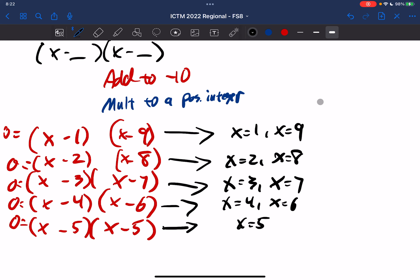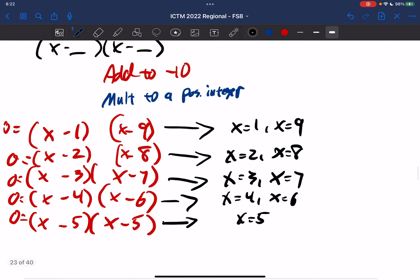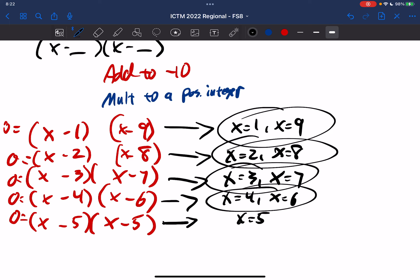Now we want the sum of all the distinct, as they said, distinct integer solutions. So the fact that x equals 5 happens twice doesn't matter. Now I organize them this way because when we add these up, these all add up to 10.